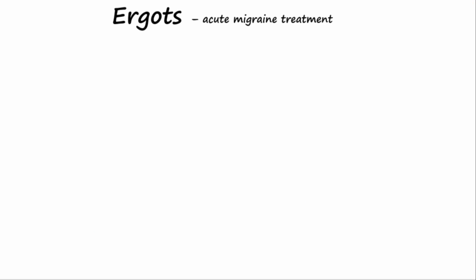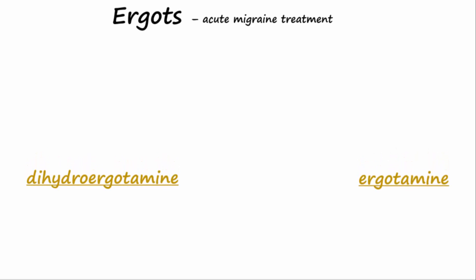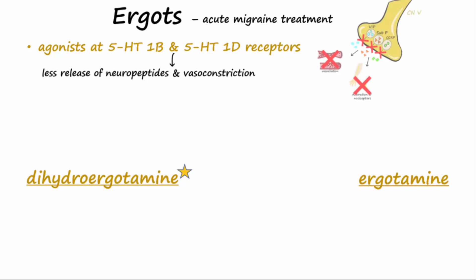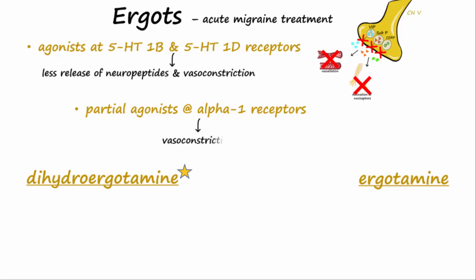Ergots may be used in the acute treatment of migraines and include dihydroergotamine and ergotamine. Overall, dihydroergotamine is more effective at relieving migraines. Ergots act as agonists at 5-HT1B and 5-HT1D receptors, leading to less release of neuropeptides and vasoconstriction. They also are partial agonists at alpha-1 receptors, causing further vasoconstriction.